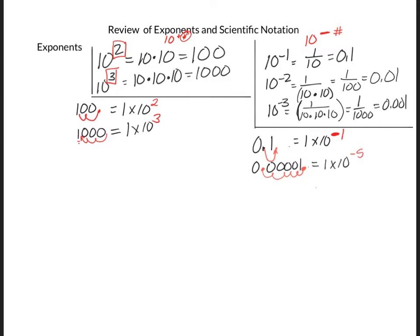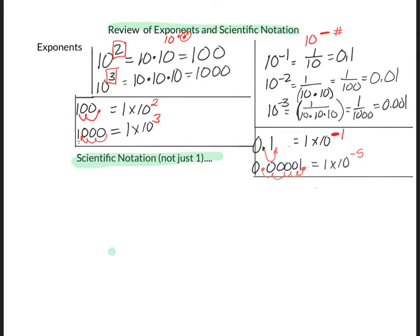Now let's look at scientific notation. Scientific notation allows us to express numbers other than 1 times 10 multiples — we're going to have multiples like 2 times 10 or 1.6 times 10 to a power. In scientific notation, it's very precise about how many numbers are in front of the decimal place so that everybody is consistent. For correct scientific notation, there should be one number between 1 and 9 in front of the decimal place. The number of digits following that can be any number, but there should be only one number in front of the decimal.